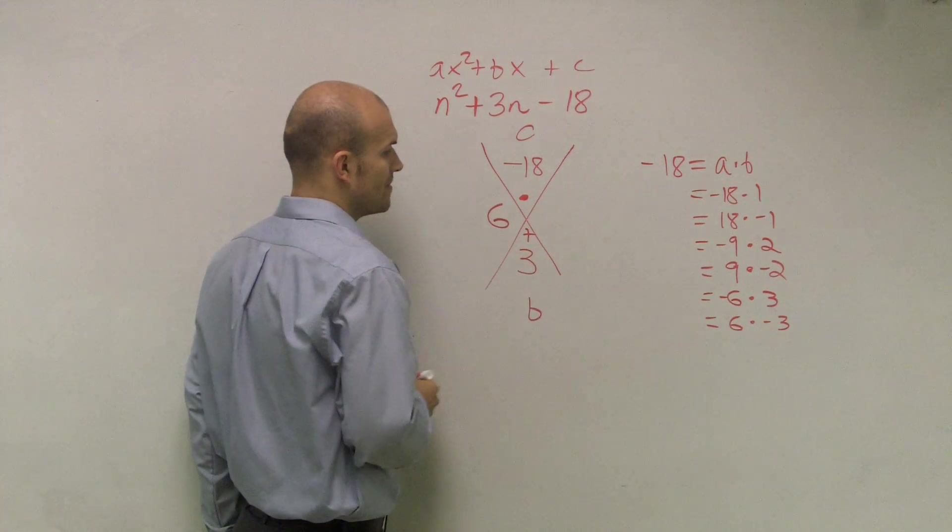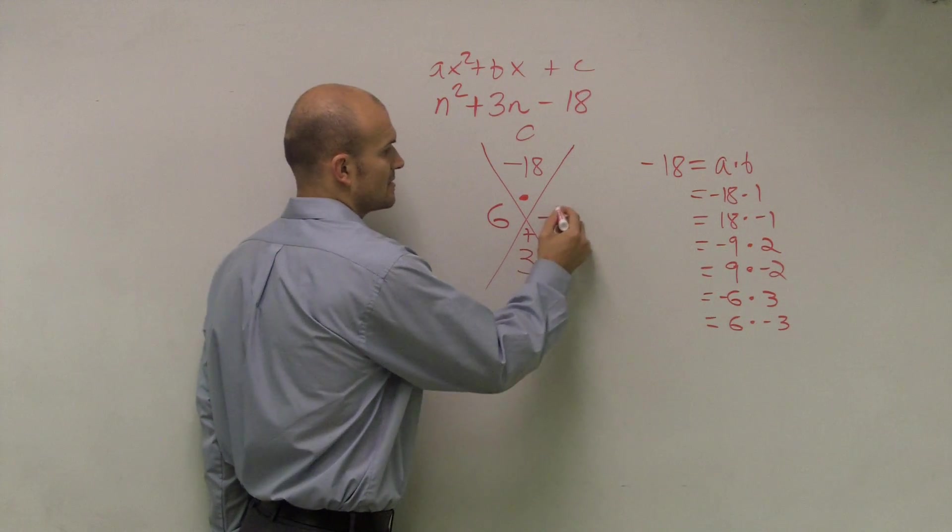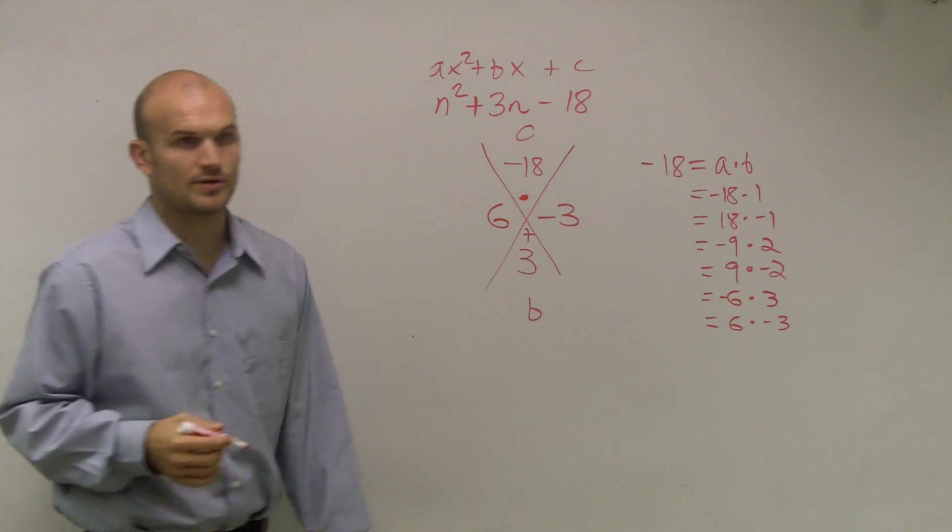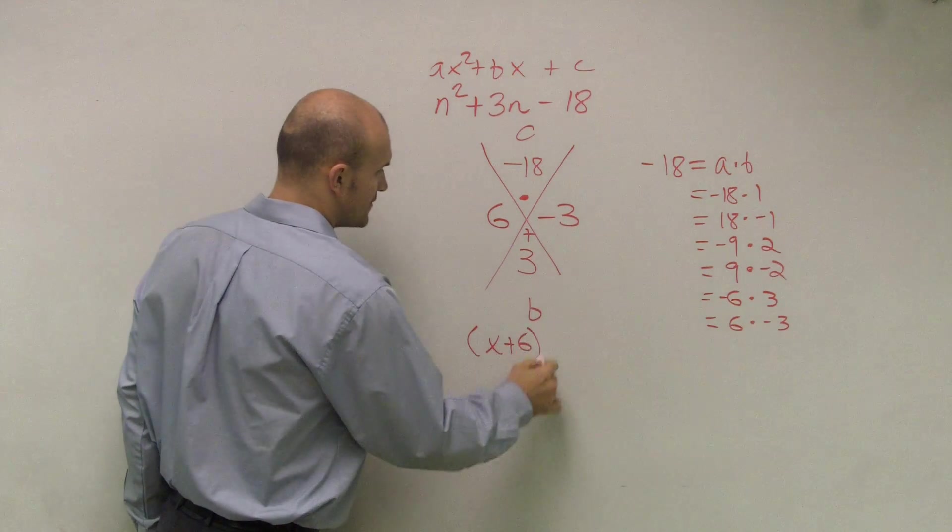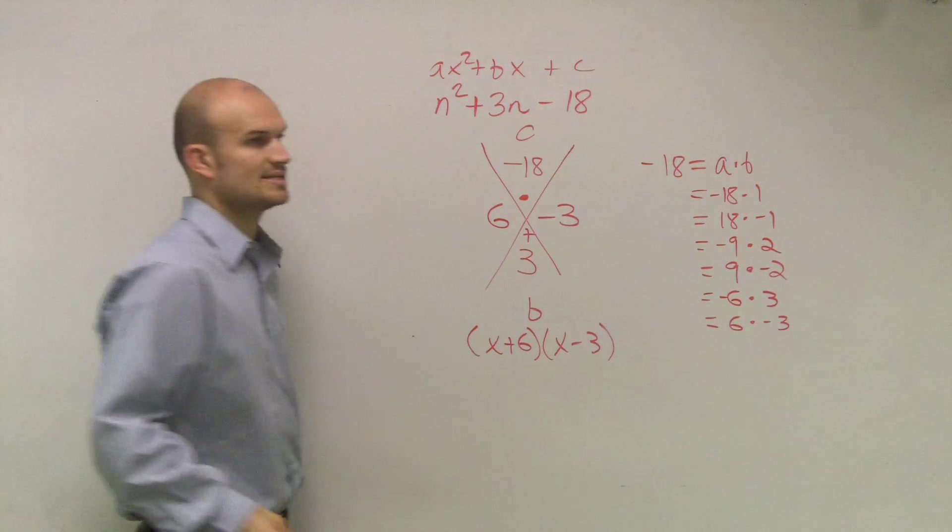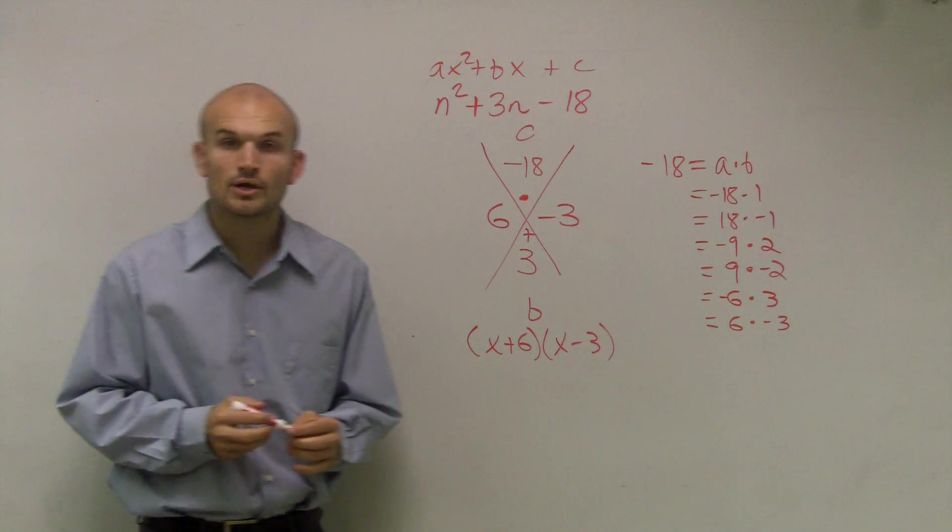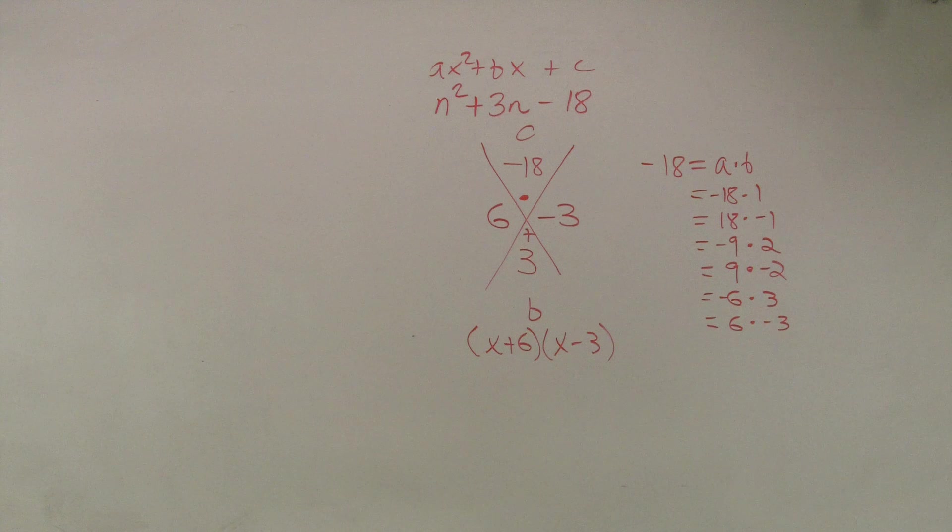So therefore, my two factors here are going to be 6 and negative 3. Now, for this video, I'm going to show you how to write it out, even though we have not talked about it yet. But that's how we write the final answer. That's it. That's how you go for it.